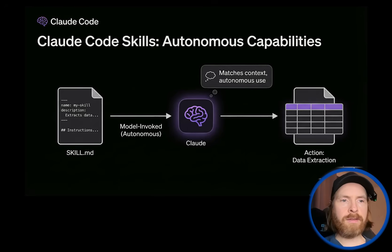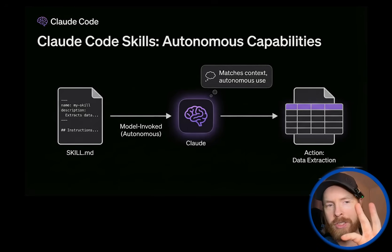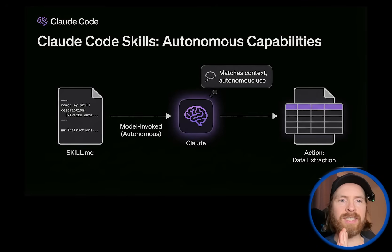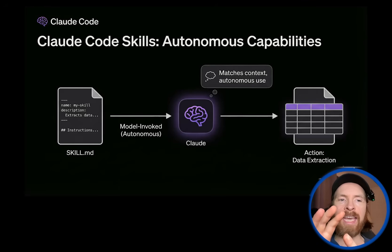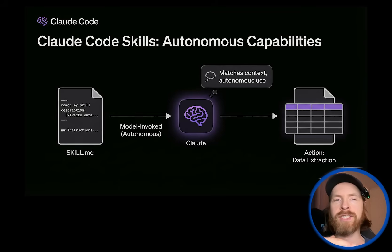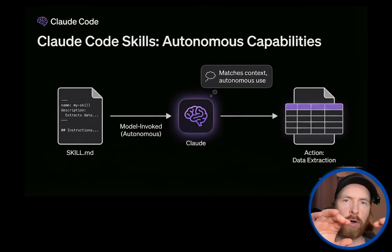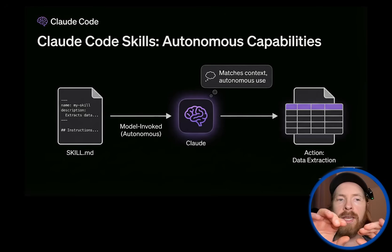Very simple. You just write a skill.md file. Here you have a description and you have an instruction. Claude Code has this in context, and what I really like about this is that it's very effective since the model knows what the skill is doing — it's very fast at executing it. It doesn't need to ask the user a bunch of questions. Everything is in the instructions and descriptions. The description tells the model when to call it, and the instruction tells it what to do.